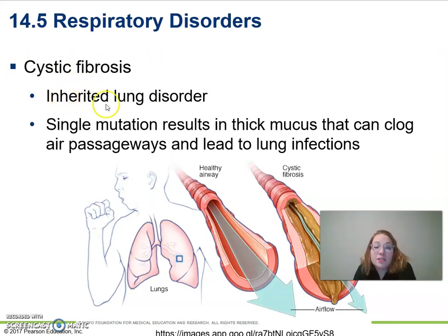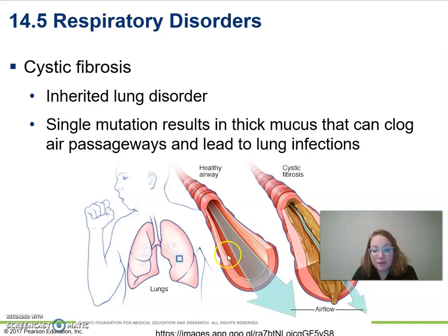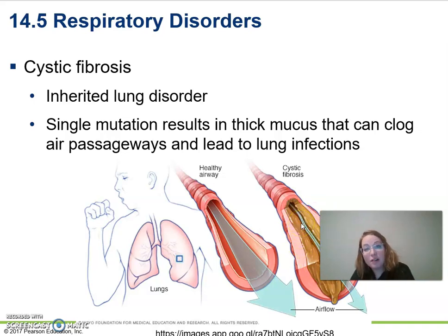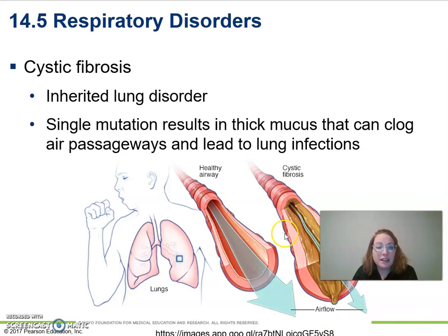Cystic fibrosis is an inherited genetic disorder affecting a chloride channel. Normally, chloride is pushed onto the airway surface and water follows to keep mucus watery and mobile. Without that chloride channel, there's very little water, mucus becomes thick and immobile, reducing airflow and leading to secondary bacterial infections.